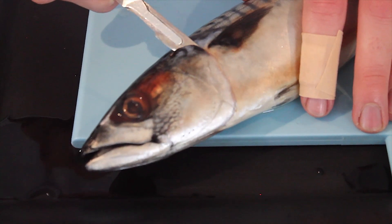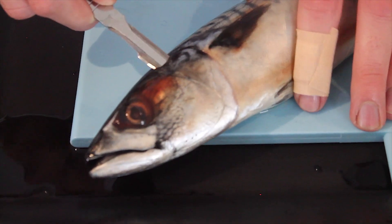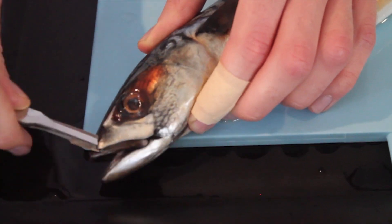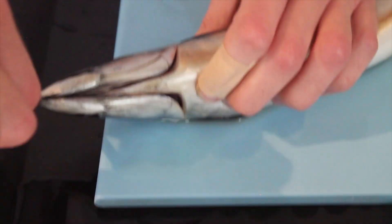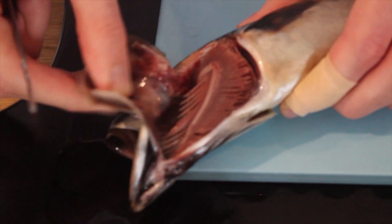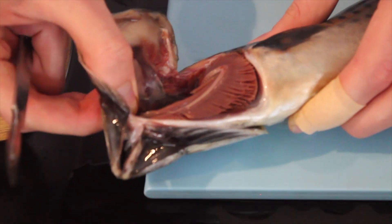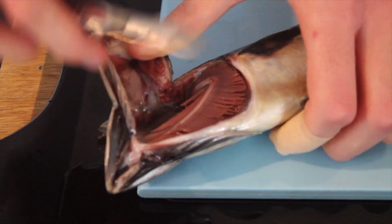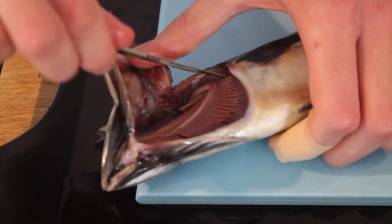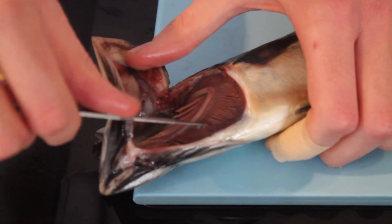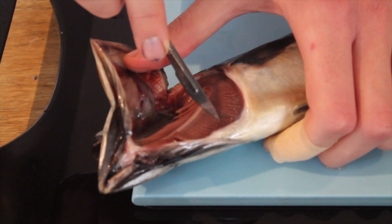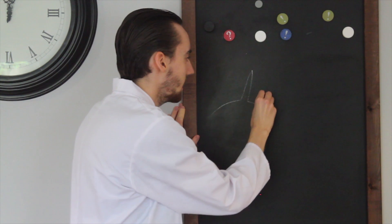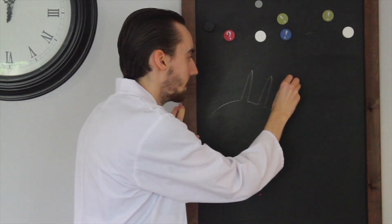If we cut open the gill flaps and remove them, you can see these beautiful reddish structures. These are the gills. Each gill is made of lots of thin plates called gill filaments, which give the gills a larger surface area to help increase the rate of gas exchange. Gill filaments are further cut into even smaller structures called lamellae.